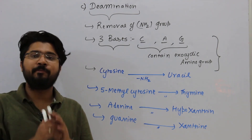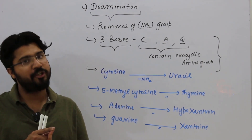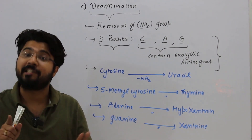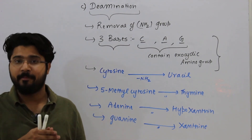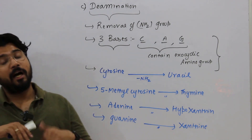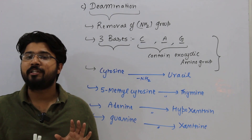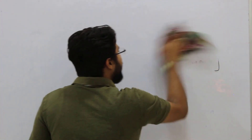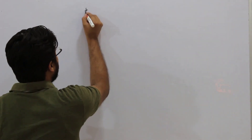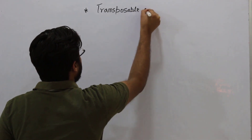That concludes the three main reasons of spontaneous lesions: depurination and depyrimidination, oxidative damage, and deamination. Combined with replicative errors from part 2, we have now finished all the reasons for spontaneous mutation. The last reason that can result in a spontaneous mutation is transposable elements — though transposable elements do not result in spontaneous lesions; they are a separate category of spontaneous mutation.